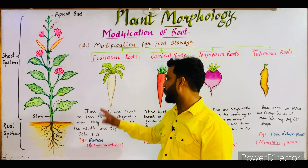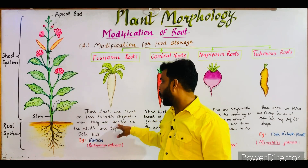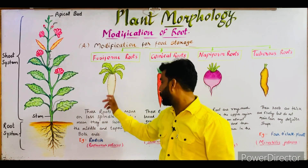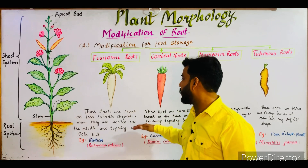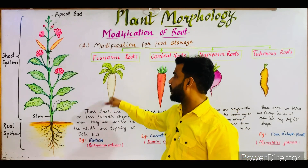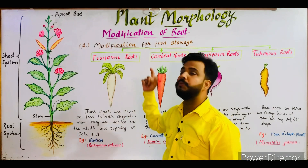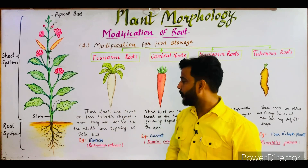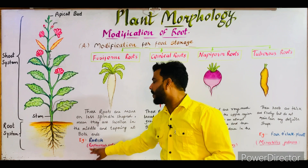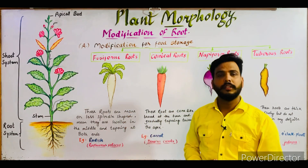These fusiform roots are swollen in the middle and tapered at both ends. The example of a fusiform root is radish, and the botanical name of radish is Raphanus sativus.